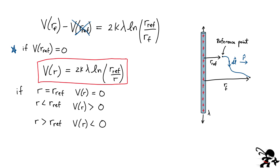If you substitute R equals RF into the expression, you get the natural log of 1, which is zero — matching our condition that the voltage at the reference point equals zero. For distances closer to the wire than the reference point, the ratio inside the log is greater than one, so the potential is positive; potential increases as you approach the wire. For distances farther than the reference point, the ratio is less than one, giving a negative natural log, so the potential is negative there.